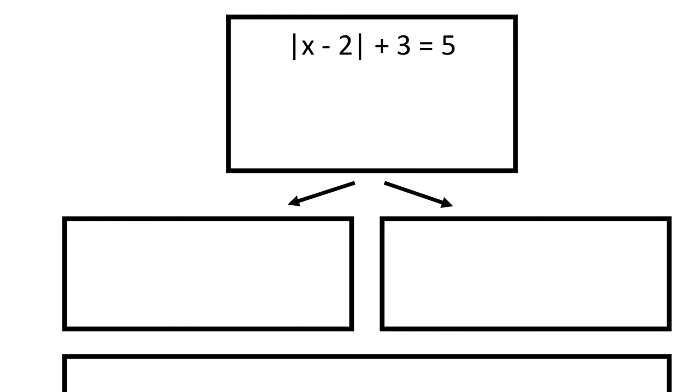So I've got one more example to show you. And for these examples, I'm going to ask you to do something called isolate the absolute value. So what this means is before I set up my two equations, I've got to isolate just this part of the absolute value.